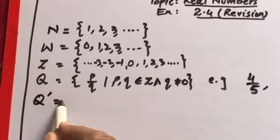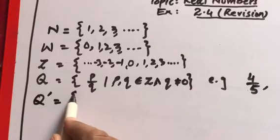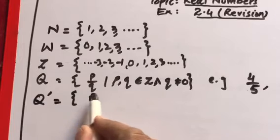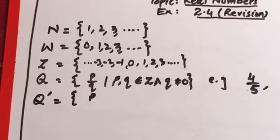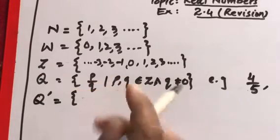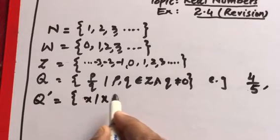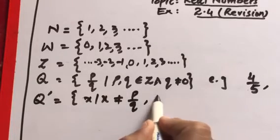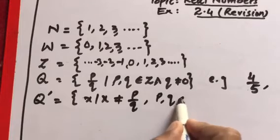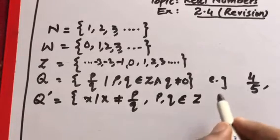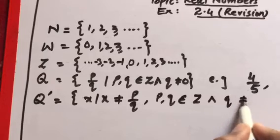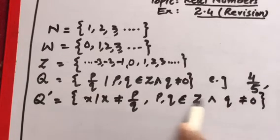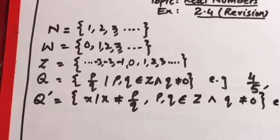After that we revised the irrational numbers, represented by Q′. These are numbers that cannot be written in the form p/q — that is, x such that x ≠ p/q, where p and q belong to integers and q ≠ 0. For example: √2, √3, π, and the natural base e are all irrational numbers.